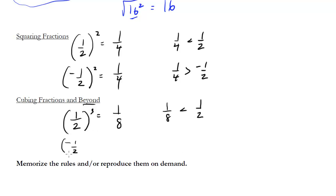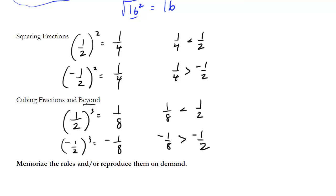What happens though if I cube negative one half? Well, I get negative one eighth. Again, it's negative, but it's actually bigger because it's a smaller negative fraction. So this is where things get very strange. Again, you don't have to memorize the rules — I just like picking a number, squaring it or cubing it or whatever, and seeing what happens. That's the best way to remember these.